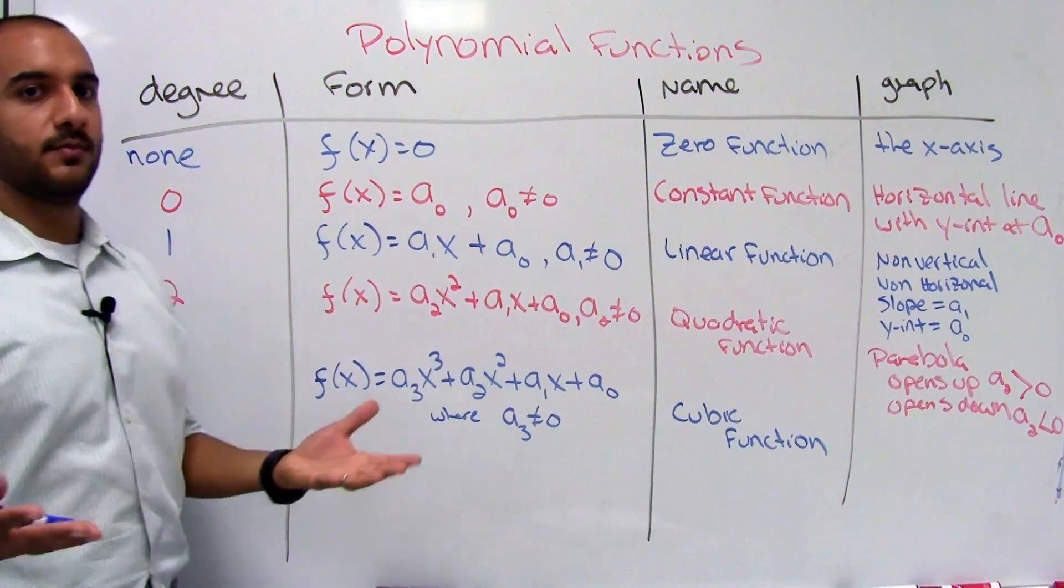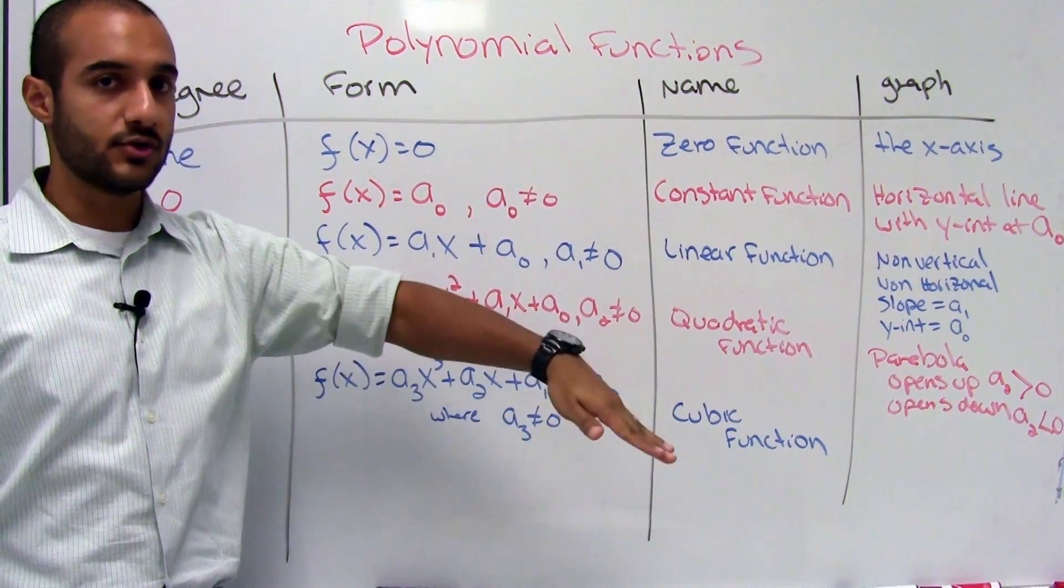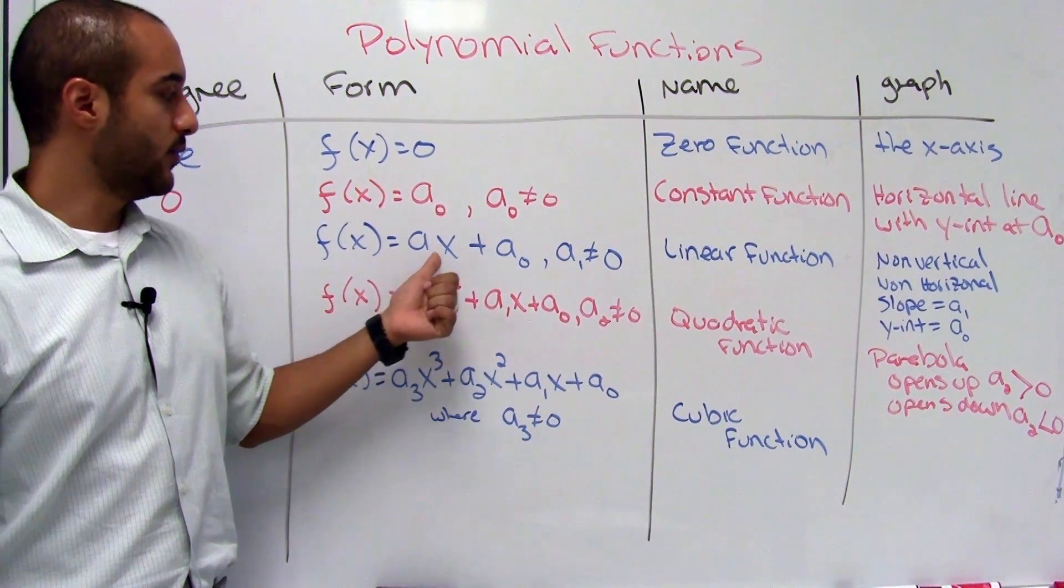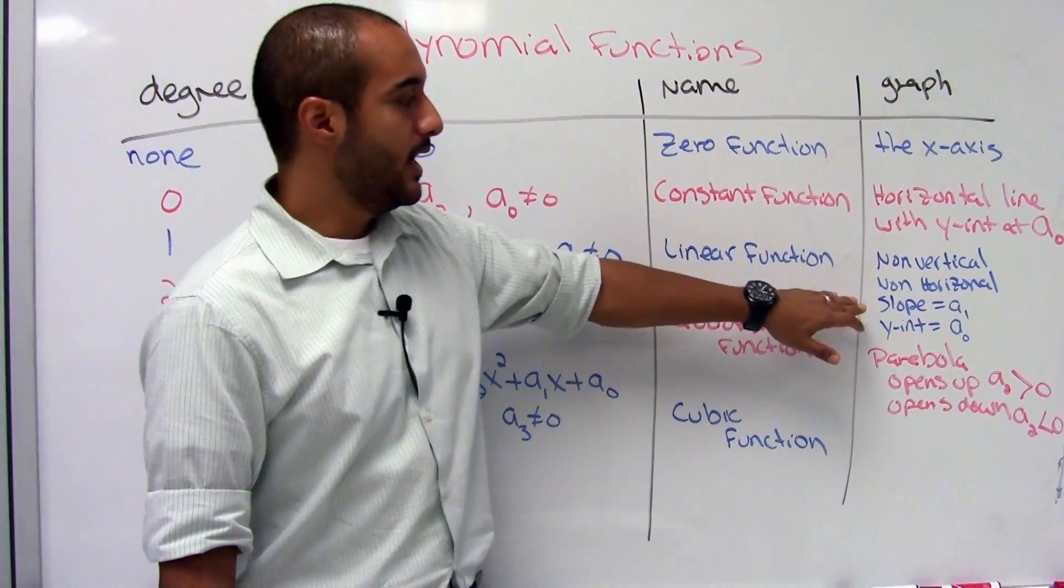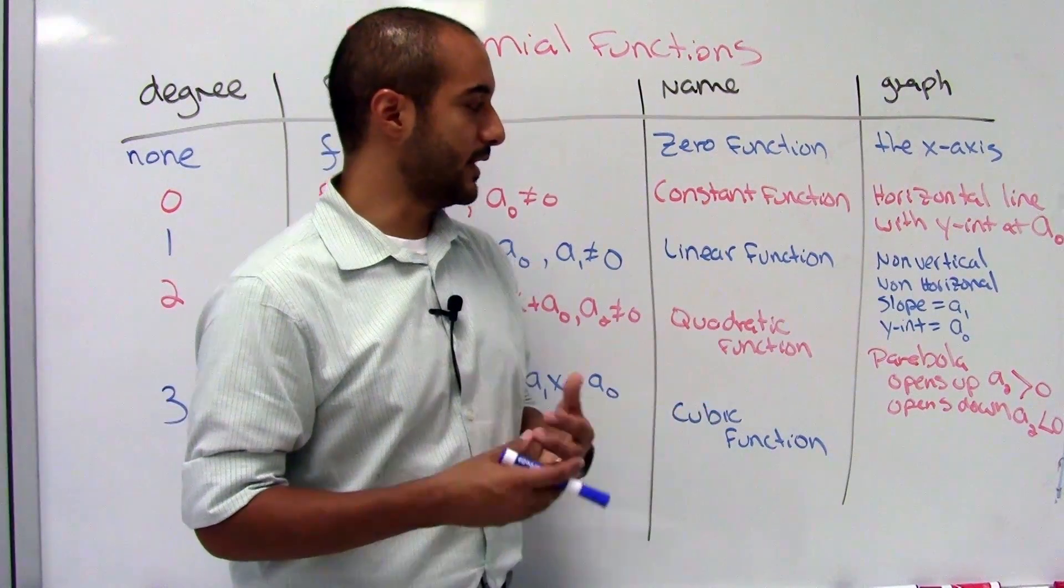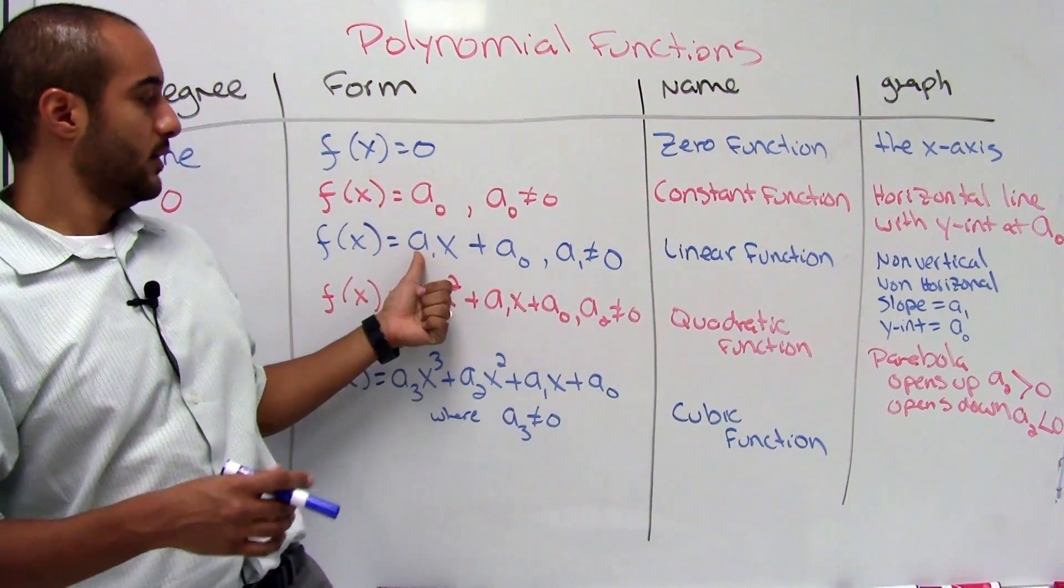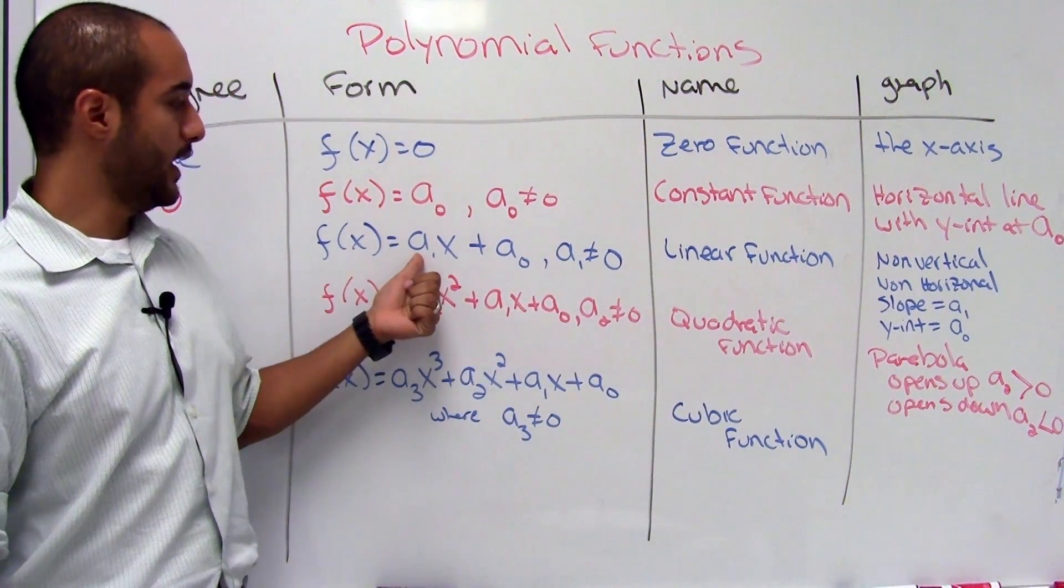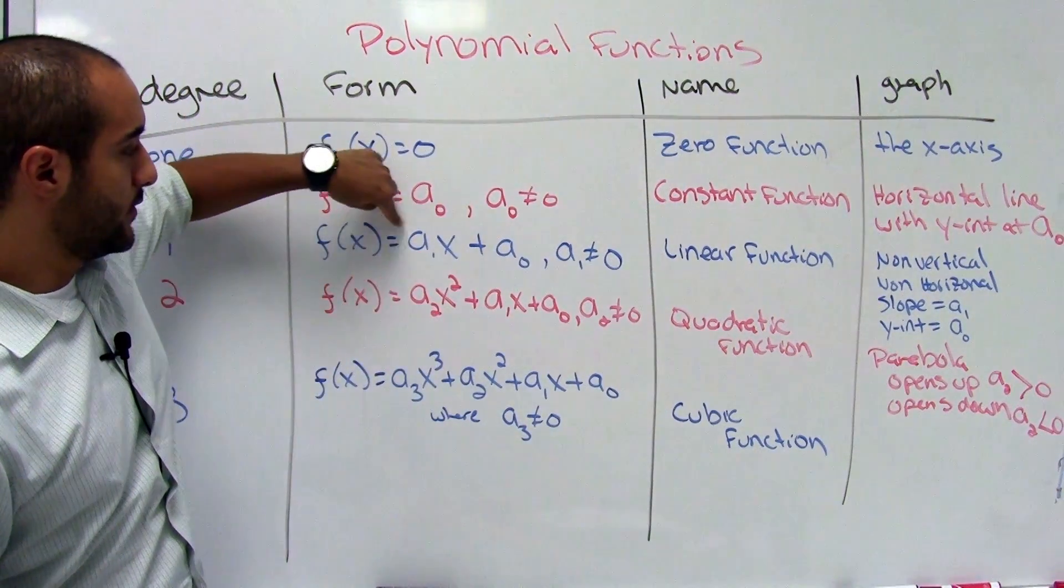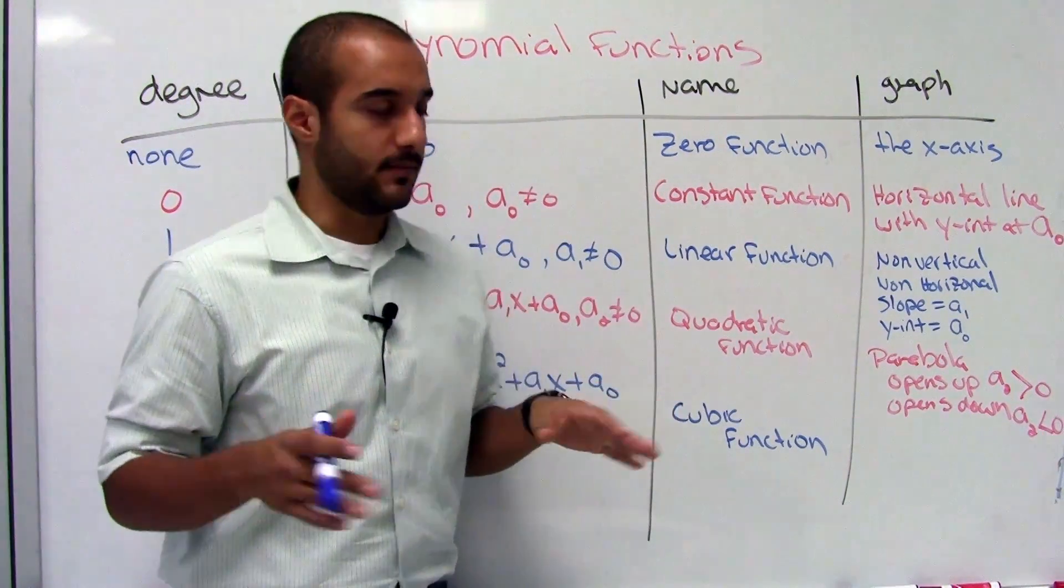When the degree is one, it's one that we should be really familiar with. That one is our linear functions. So those are all the straight lines. And this looks like in the form f of x is equal to a sub one x plus a zero. And these are always going to be non-vertical and non-horizontal lines with slope equal to your a sub one. Now you might be more familiar with it in the form y is equal to mx plus b, but it's the exact same thing. This has changed the name a little bit around here, but it's the same thing.